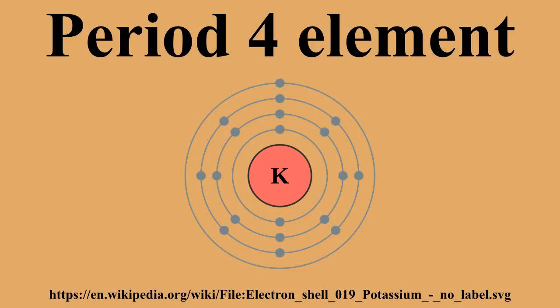A new row is begun when chemical behavior begins to repeat, meaning that elements with similar behavior fall into the same vertical columns. The fourth period contains 18 elements, beginning with potassium and ending with krypton.